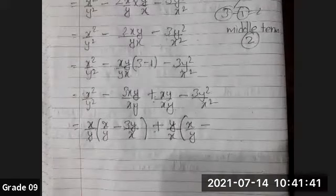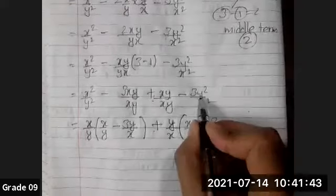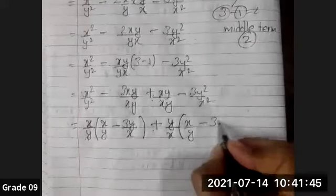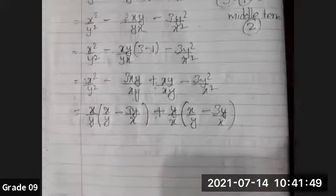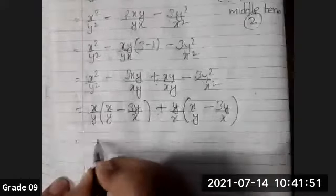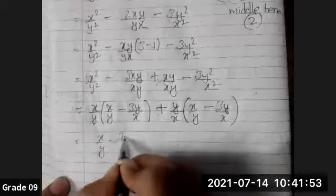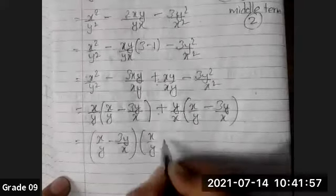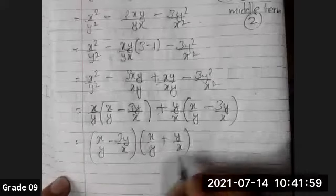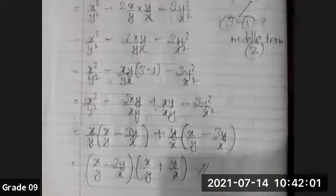Now finally, your answer is going to be (x/y - 3y/x)(x/y + y/x). This is your final answer of this factorization.